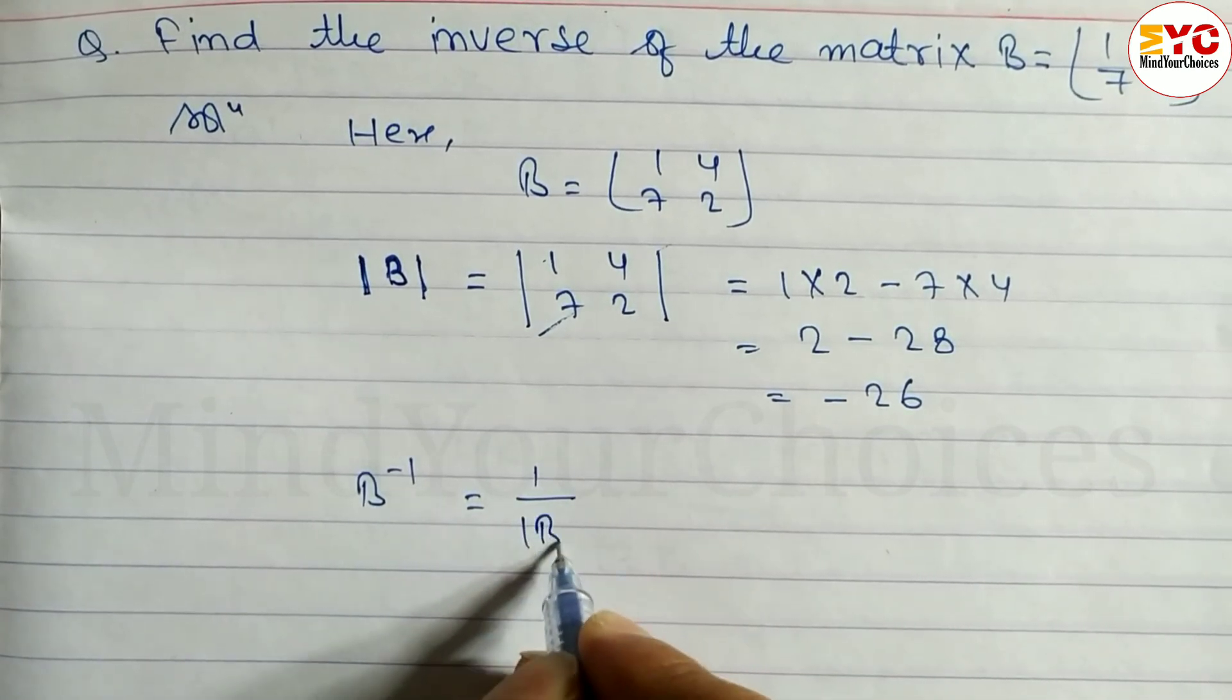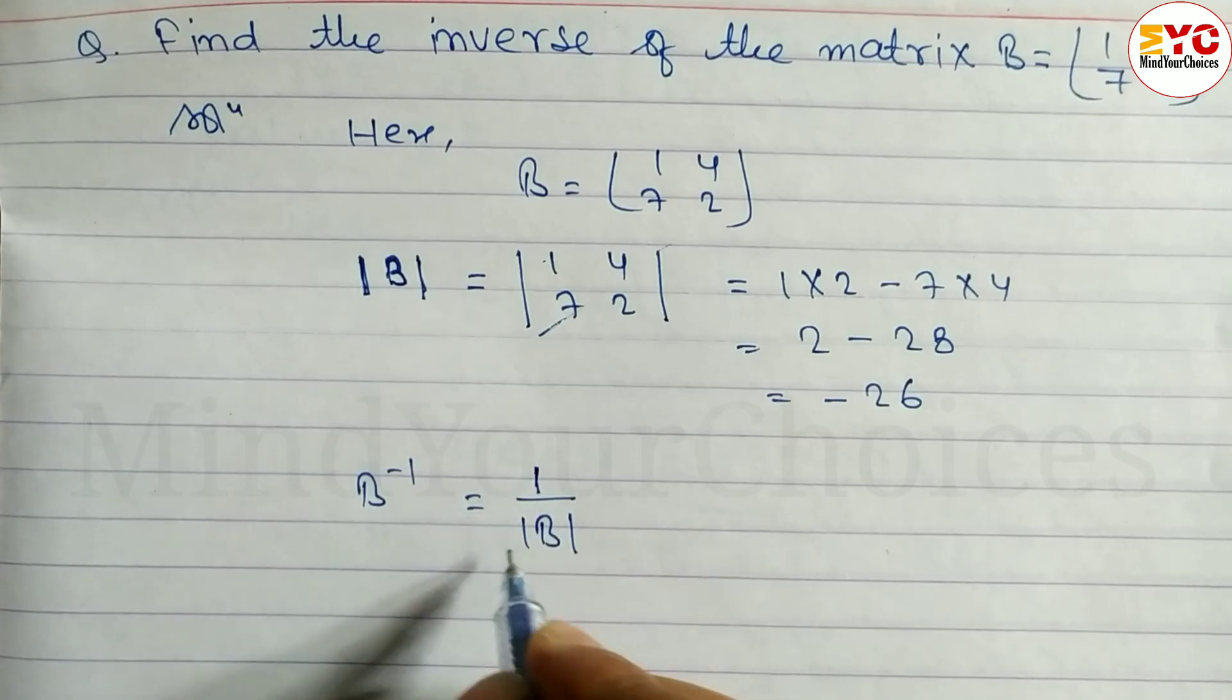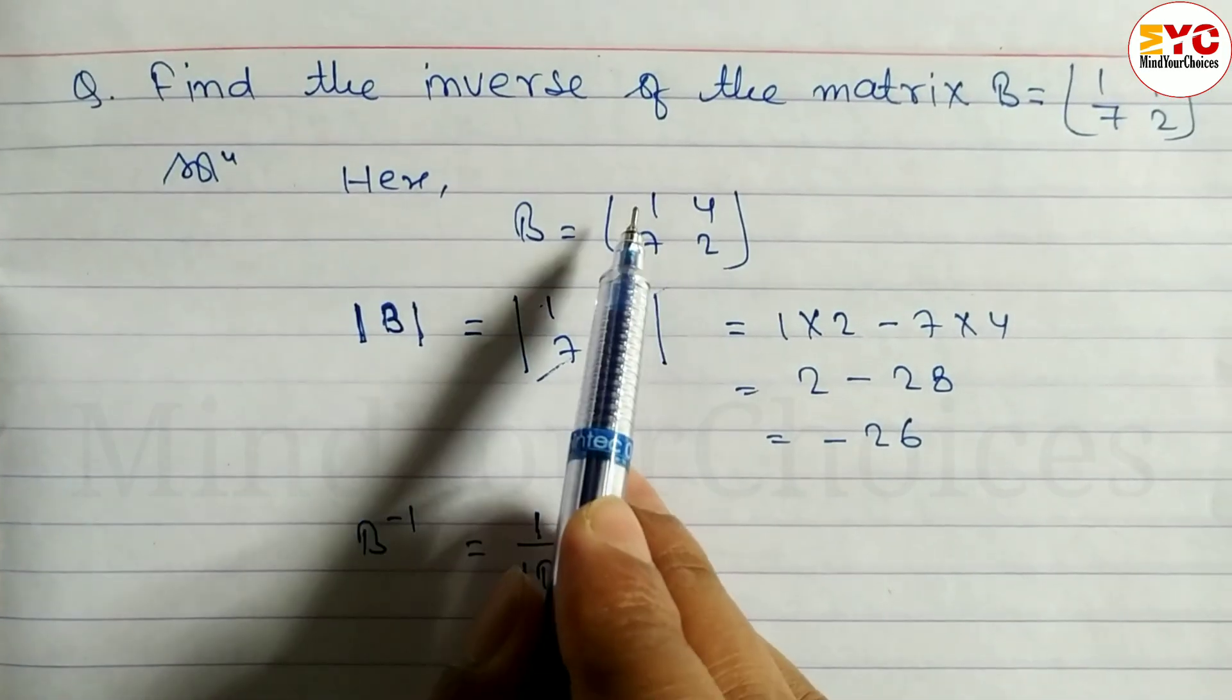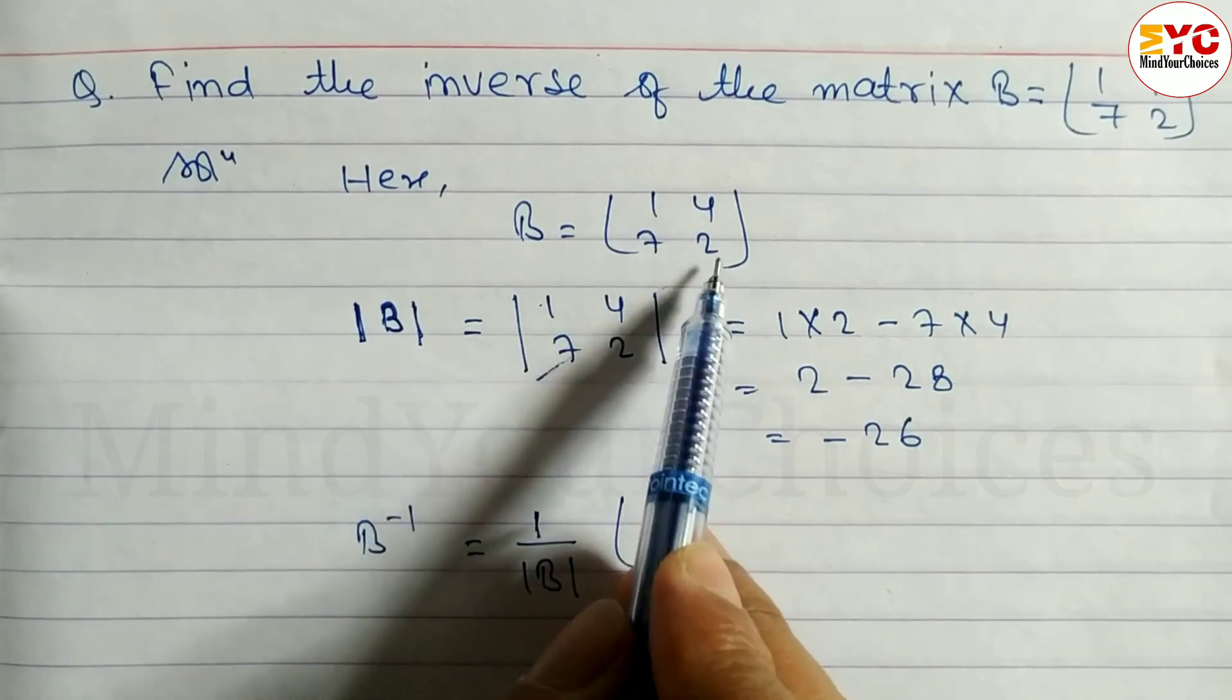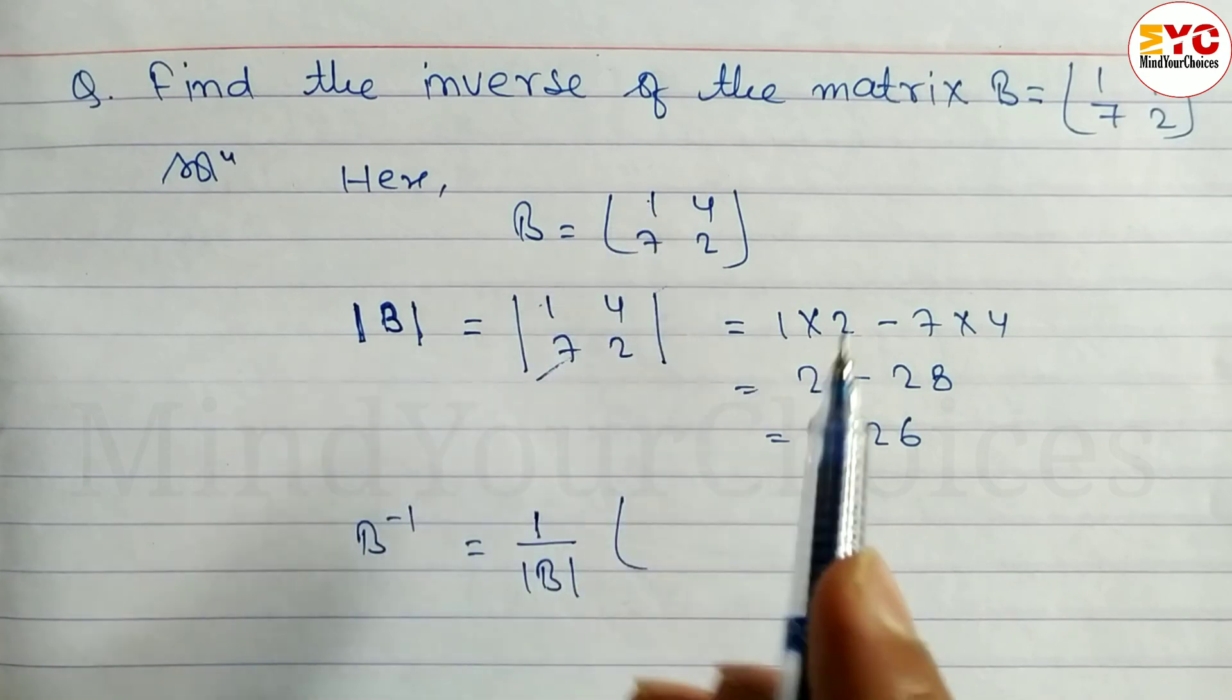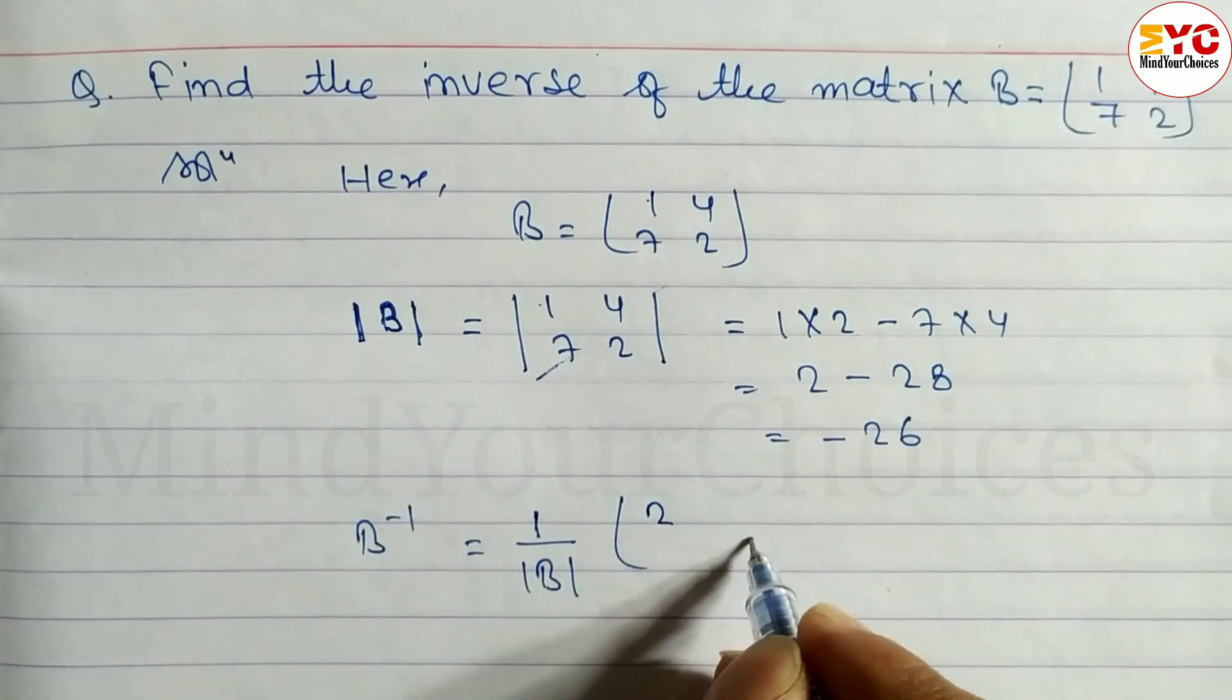Write 1 over determinant B. The main thing is we have to interchange the main diagonal elements. In place of 1 we write 2, in place of 2 we write 1.